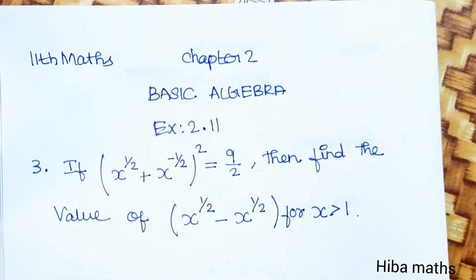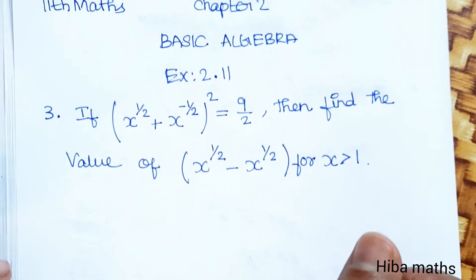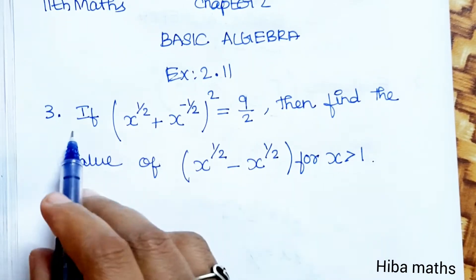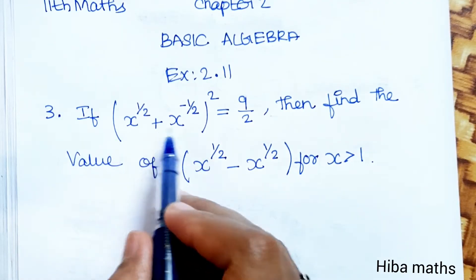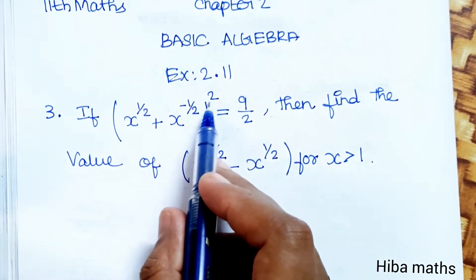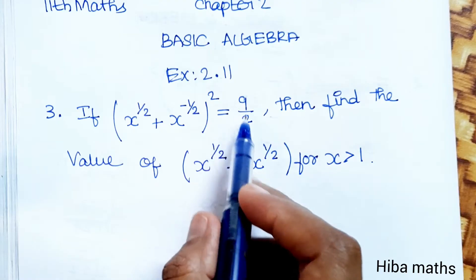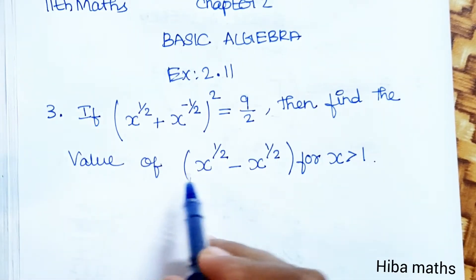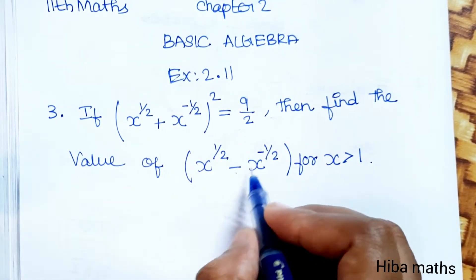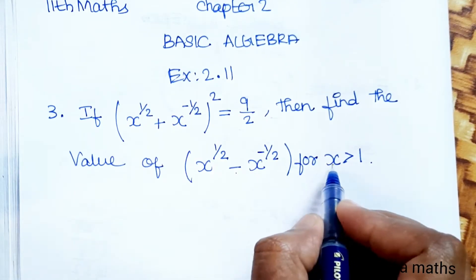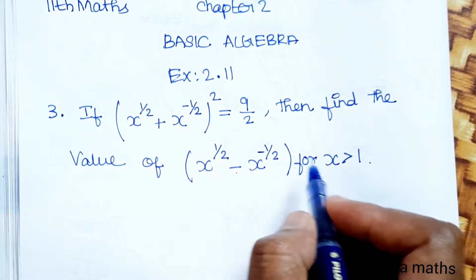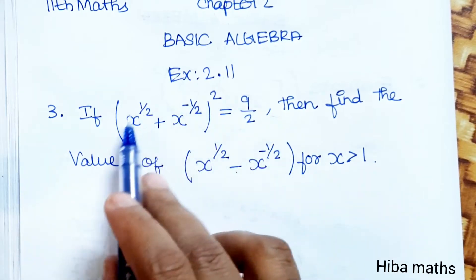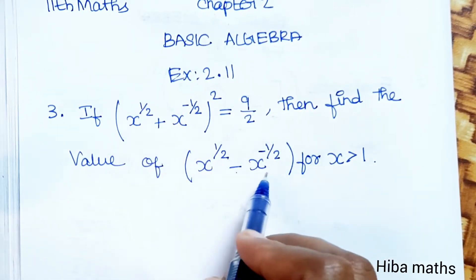Hello students, welcome to HibaMax 11 Standard Math, Chapter 2 Basic Algebra, Exercise 2.11, the third question. If x power 1 by 2 plus x power minus 1 by 2, whole square is equal to 9 by 2, then find the value of x power 1 by 2 minus x power minus 1 by 2 for x greater than 1.